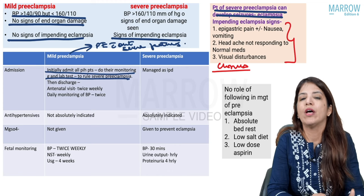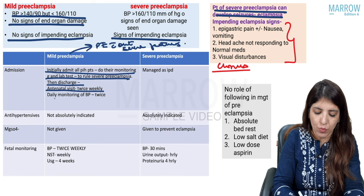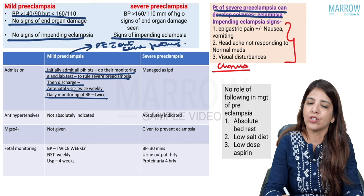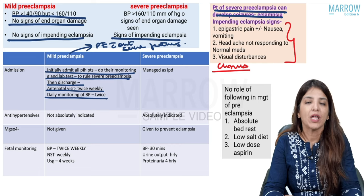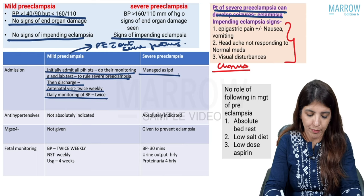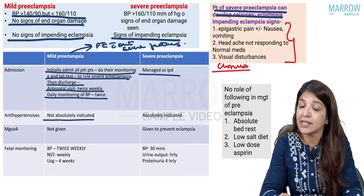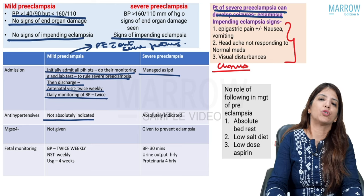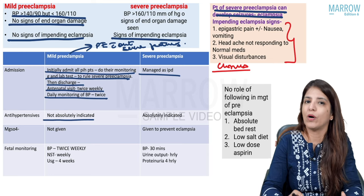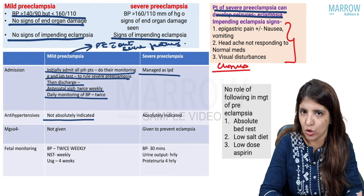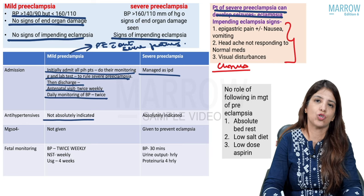If dealing with preeclampsia without severe features, discharge them and tell them to come for antenatal visits twice weekly, with home BP monitoring twice a day. In severe preeclampsia, keep them admitted. Antihypertensives are not absolutely indicated in mild preeclampsia — only NICE guidelines say give antihypertensives if BP is persistently more than or equal to 150 by 100. In severe preeclampsia, antihypertensives must be given to prevent intracranial hemorrhage.